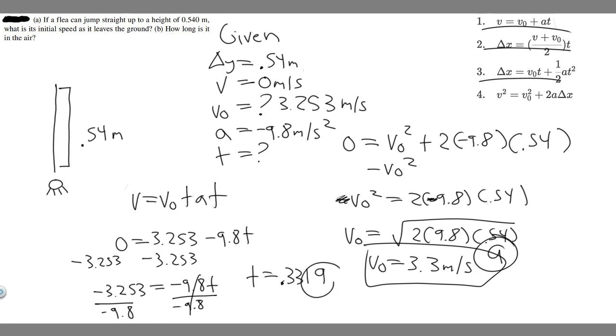And you'll get T equals 0.3319. So you can round this however you want. Again, I'm just going to round to the hundredth place. So 0.33 seconds, because keep in mind, we're using meters per second here, so the time unit we're using is seconds. So 0.33 seconds. This is the answer to B.